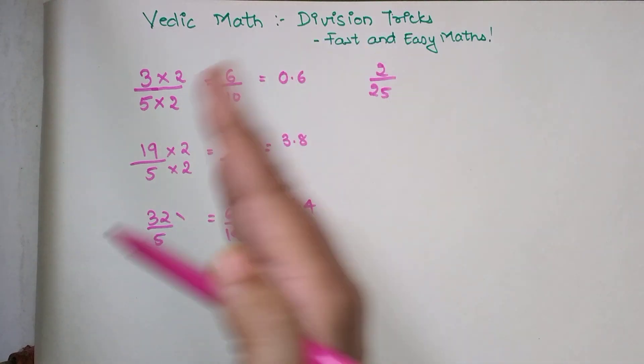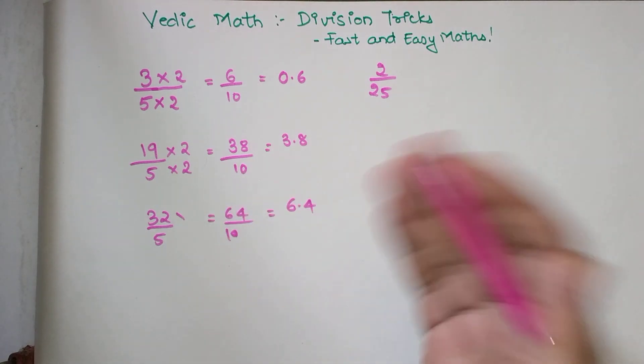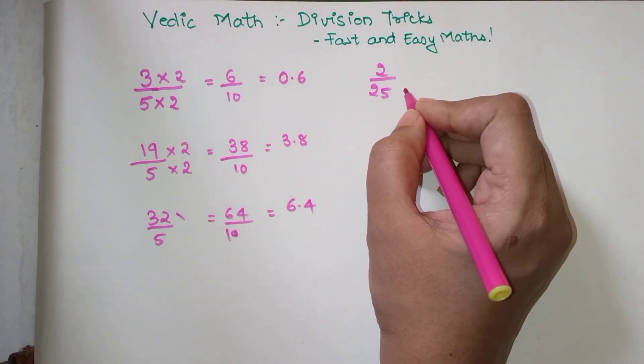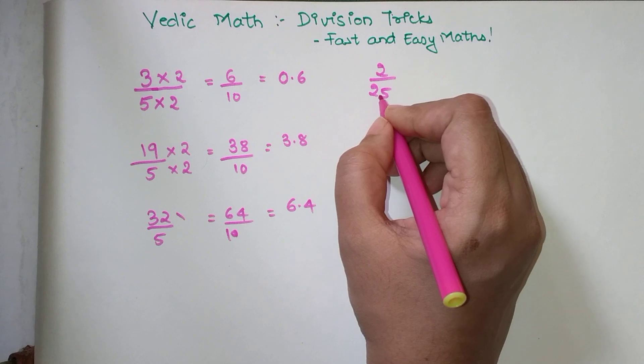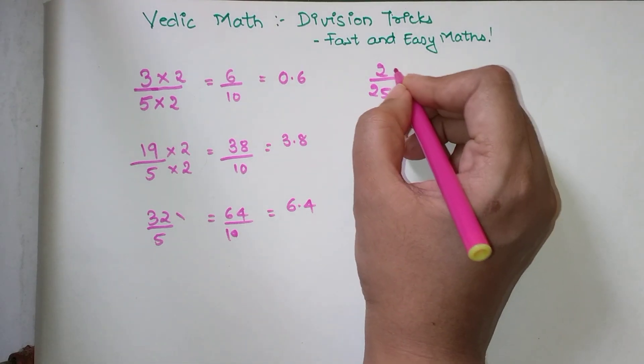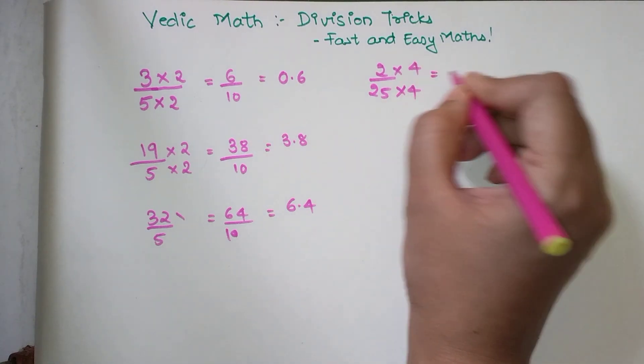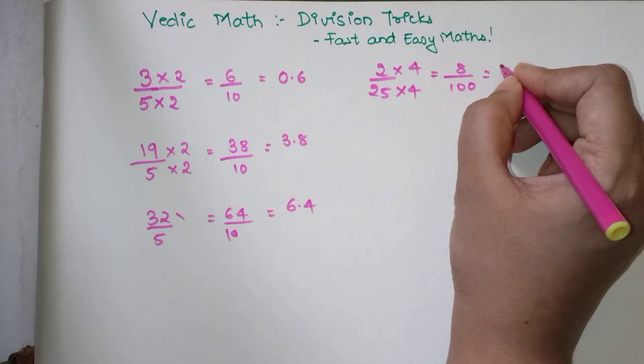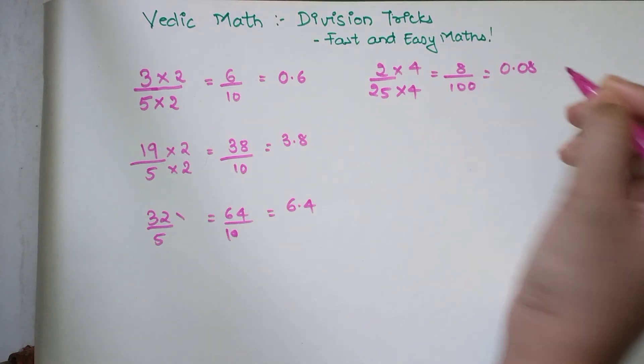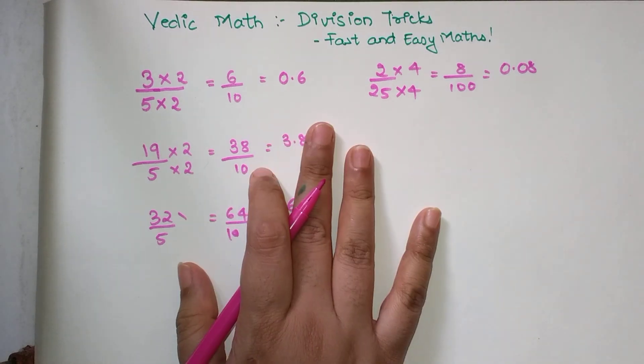For example, if we had to divide 2 upon 25, we convert 25 to 100 by multiplying with 4. If I multiply the numerator and denominator by 4, my answer is 8 upon 100, and my final answer is 0.08.